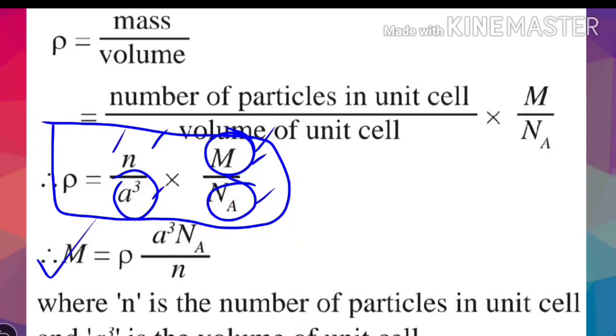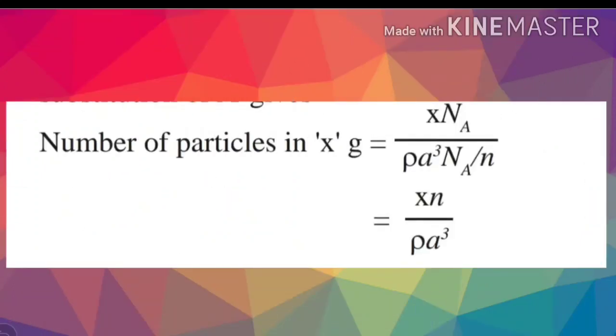The formula for density of unit cell is ρ equals n M over N_A a³. Number of particles in x grams of crystal can be calculated. The final formula is x times N_A divided by ρ times a³, where x is the mass of metal, n is number of particles per unit cell, ρ is density, and a is the edge length.